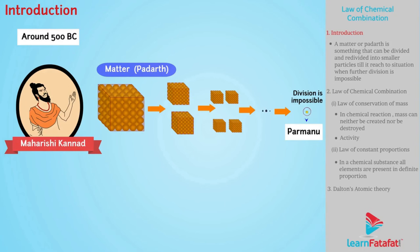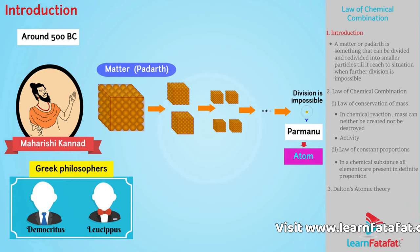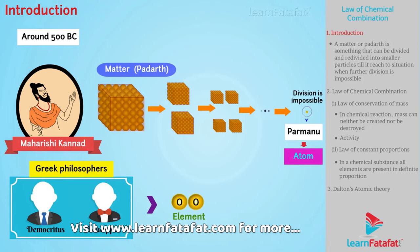The same theory was found by Greek philosophers Democritus and Leucippus independently. They called these smallest particles atoms. These theories increased interest of scientists which helped them differentiate between elements and compounds.